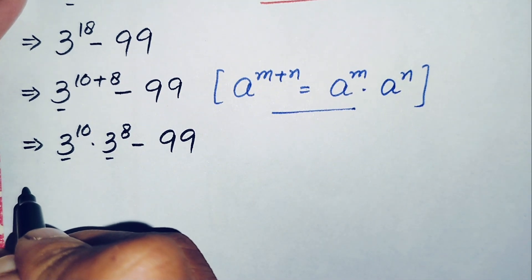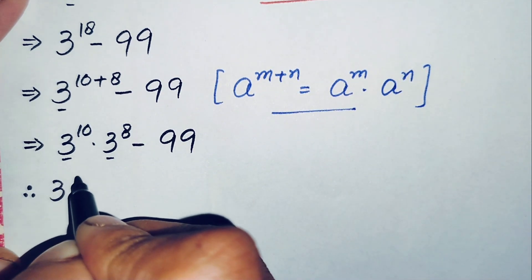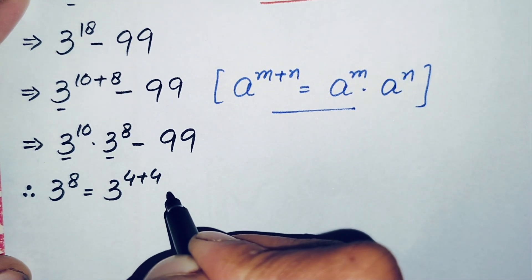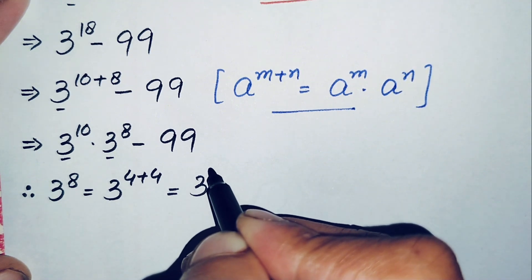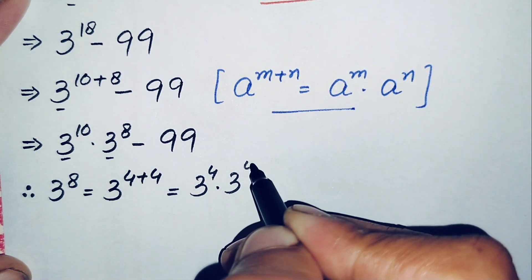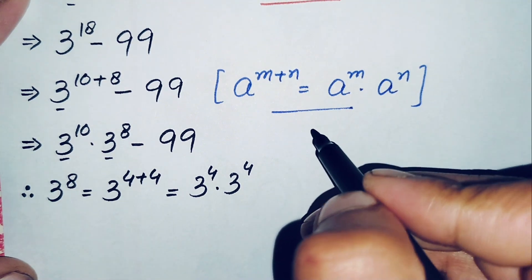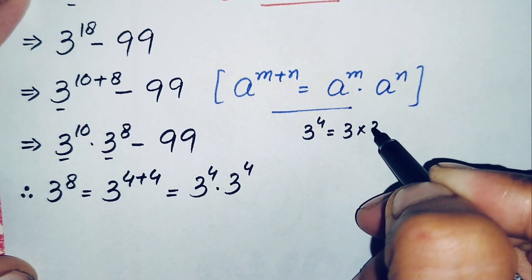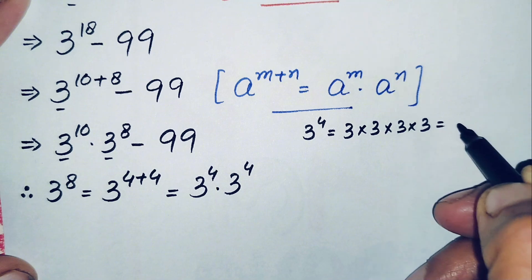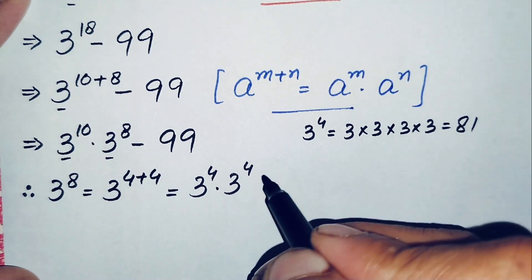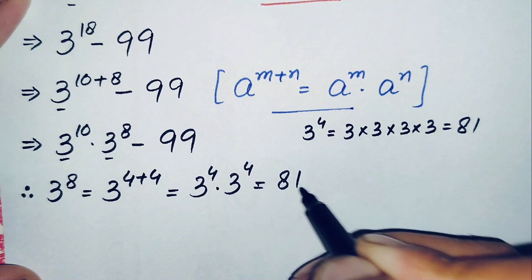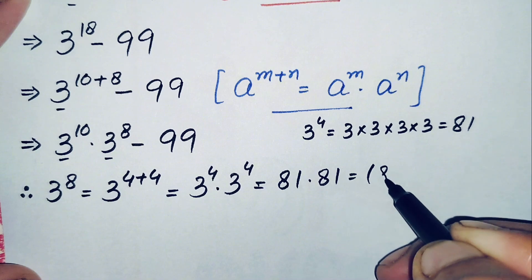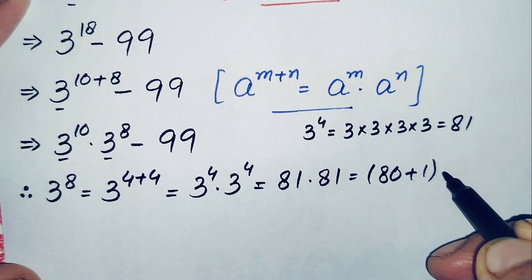So 3 to the power 8 — since 8 equals 4 plus 4, using the exponential property we can write this as 3 to the power 4 times 3 to the power 4. Now, what is the value of 3 to the power 4? We multiply 3 four times: 3 times 3 is 9, 9 times 3 is 27, 27 times 3 is 81. So the value of 3 to the power 4 is 81.